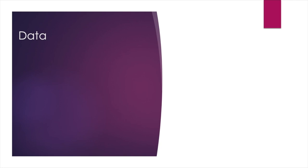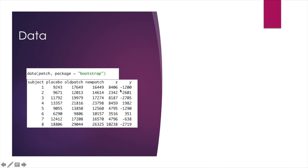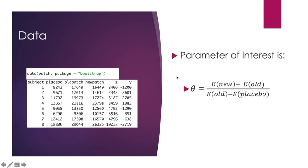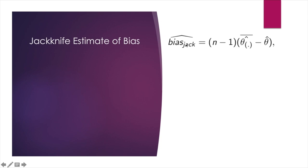We have learned how to code the Jackknife sample. Now let's continue to use R code to estimate bias using Jackknife. And so here we are going to work with a data set called patch. The patch data contains measurements of a certain hormone in the bloodstream of eight subjects after wearing a medical patch. A parameter of interest here is theta, which is y divided by z in our case. And y is the difference of the mean of new patch and the old patch. z is the difference of the mean of the old patch and the mean of the placebo.